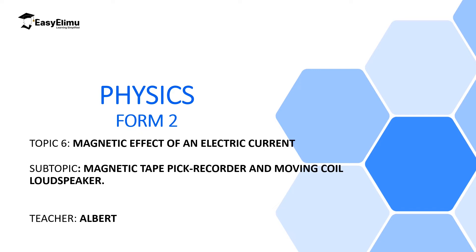Welcome to ECELEMU Learning Simplified and welcome to this lesson. In the previous lesson, we looked at some of the applications of the magnetic effect on an electric current — one of which was an electric bell, and we also looked at an electric motor or the DC motor. In this lesson, we are going to look at the magnetic tape recorder and the moving coil loudspeaker as two further applications of the magnetic effects on an electric current.